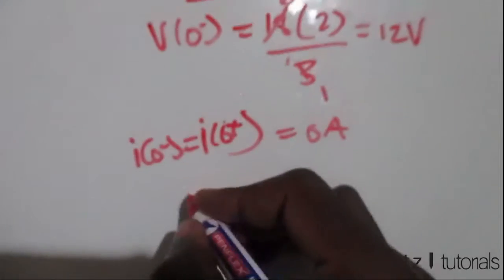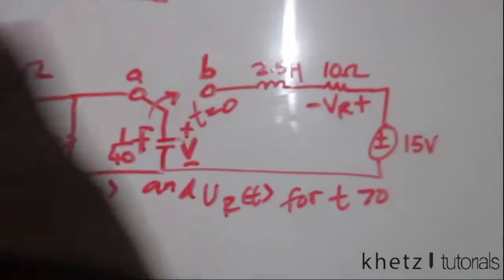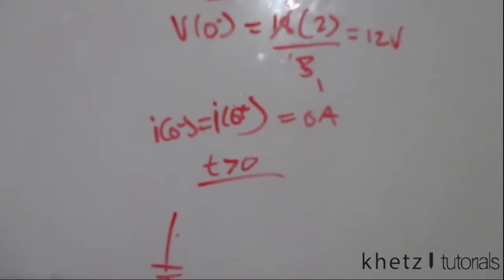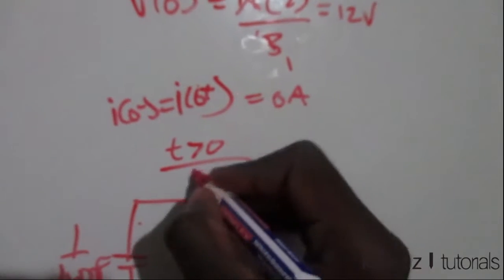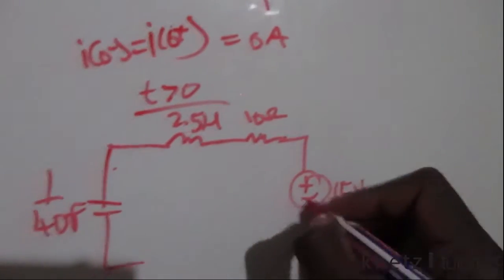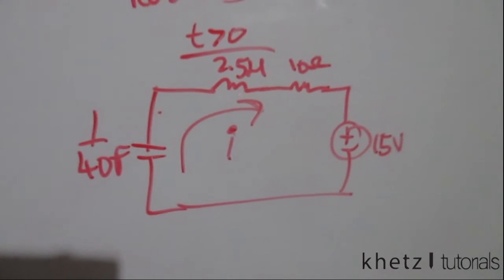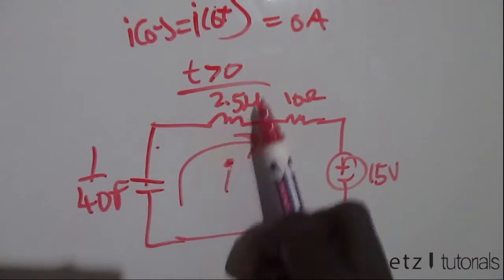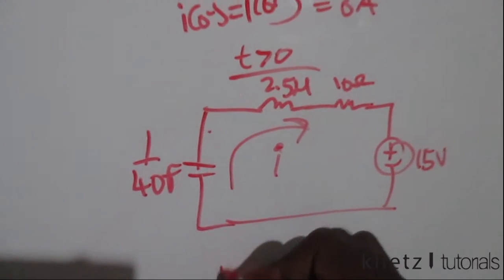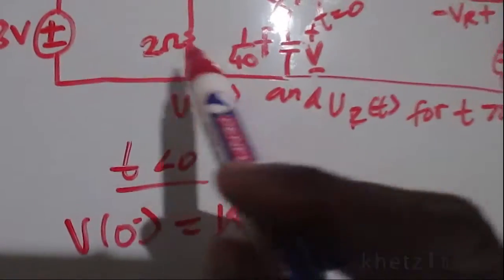Moving on to time greater than zero: the switch moves to the other position and we discard the previous section of the circuit, looking only at the new part which contains the 15-volt source. We know that a current flows through the circuit, and applying the passive sign convention we have i equals C dv/dt.